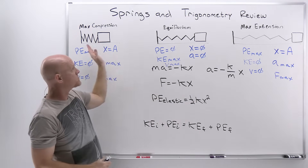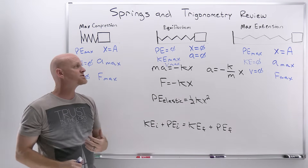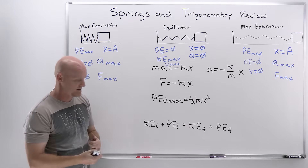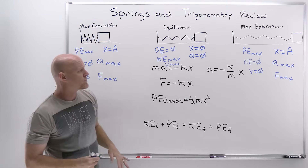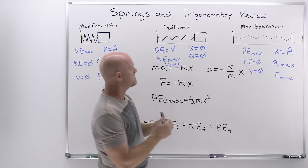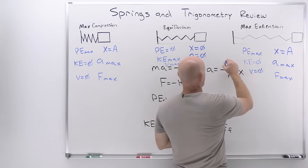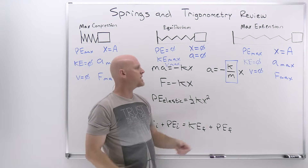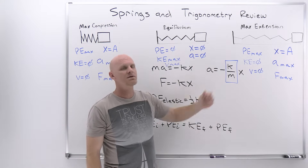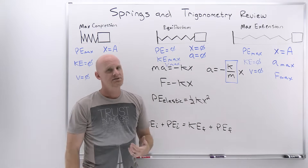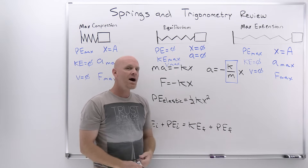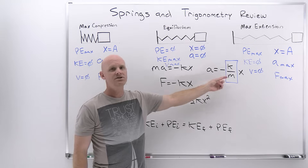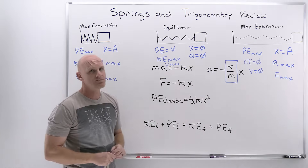If you're anywhere in between the equilibrium position and either extreme, that's when you're going to have both kinetic energy and potential energy. The acceleration is proportional to the ratio of the spring constant to the mass — k over m — and that fraction will show up again in some of the terms we define in the next lesson.